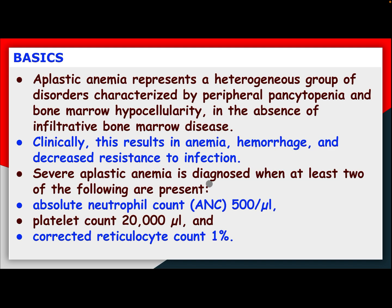Severe aplastic anemia is diagnosed when at least two of the following are present: absolute neutrophil count less than 500, platelet count less than 20,000, and corrected reticulocyte count less than 1%.